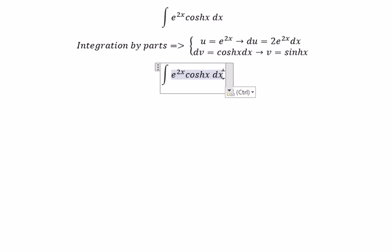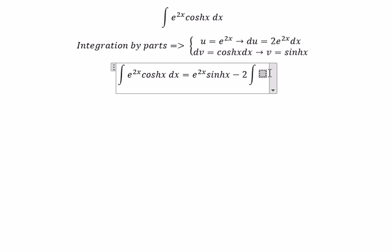So you got u multiplied with v. So you got e to the power of 2s multiplied with sine of s. And we have negative 2 multiplied with the integral of e to the power of 2s multiply with sine of s ds.